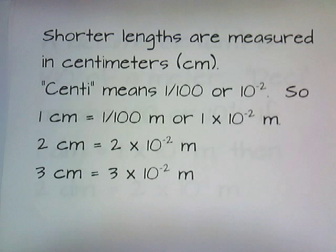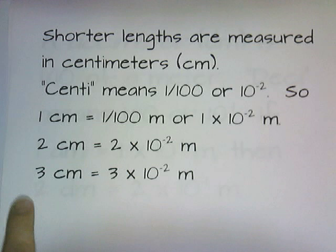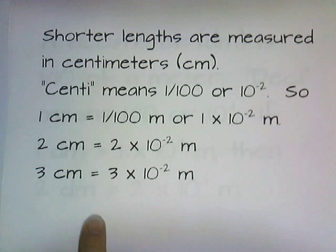Centi means one one-hundredth, or ten to the negative two. So one centimeter is one one-hundredth of a meter, or one times ten to the negative two meters. Two centimeters is two times ten to the negative two meters, and so on. Three centimeters — to convert to meters, you just slap on times ten to the negative two. Three centimeters is three times ten to the negative two meters.